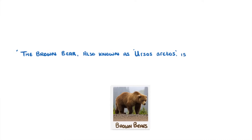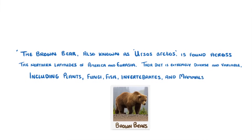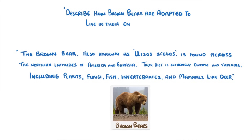Putting all of this together, let's look at a typical question. The brown bear, also known as Ursus arctos, is found across the northern latitudes of America and Eurasia. Their diet is extremely diverse and variable, including plants, fungi, fish, invertebrates, and mammals like deer. Describe how brown bears are adapted to live in their environment.